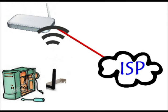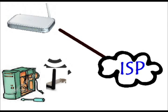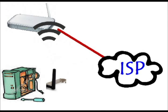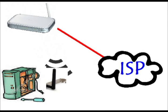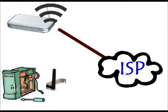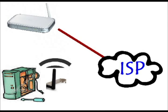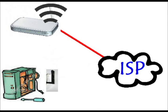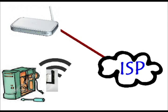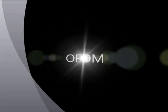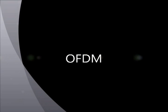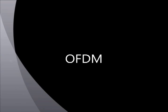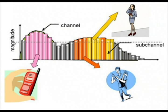The computer's wireless adapter translates data into radio signals and transmits them through an antenna. A wireless router receives and decodes the data and sends it to the internet through wired ethernet. A router consists of a firewall, an ethernet hub, and an access point. In this way, data through Wi-Fi is sent. The coding technique used is orthogonal frequency division multiplexing, in which data is split before transmitting, which reduces signal interference.